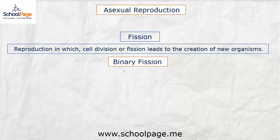Binary fission is a kind of fission in which the cell divides into two. The name 'binary' means two, so binary fission means a cell — or an organism — divides into two, giving rise to two new organisms.